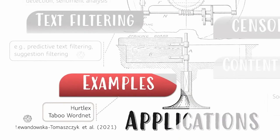We do not start from scratch, of course. There's a lot of ongoing research and different lexicons being created. For instance, HurtLex, starting from Italian and linked to multilingual WordNet. Taboo WordNet, starting from offensive and potentially inappropriate words for Japanese, also linked to Open Multilingual WordNet. And then the work by Lewandowska-Tomaszczyk and her colleagues on defining an ontology basis for offensive language identification in the context of linked open data. All of that has inspired us and we will build on it.